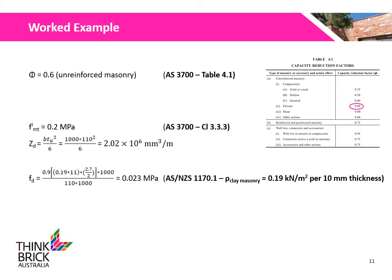The capacity reduction factor, phi, is assumed to be 0.6 for unreinforced masonry, derived from Table 4.1 of AS3700. The characteristic tensile strength of the masonry, F-Mt, is 0.2 MPa, obtained from clause 3.3.3 of AS3700. The section modulus of the bedded area, ZD, is calculated to be 2.02 × 10⁶ mm³ per metre.